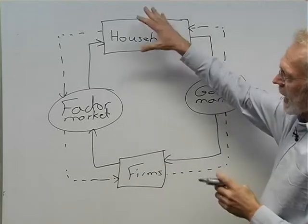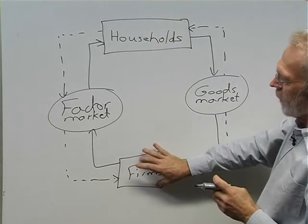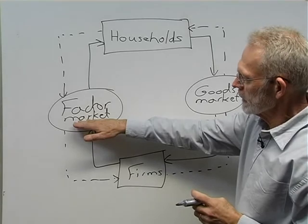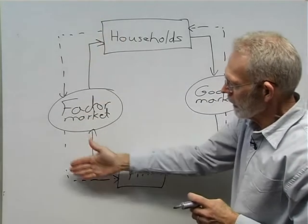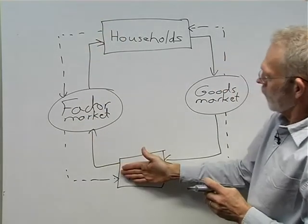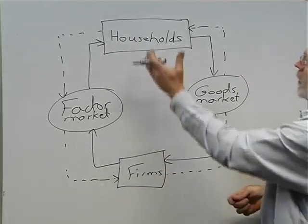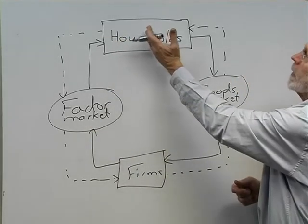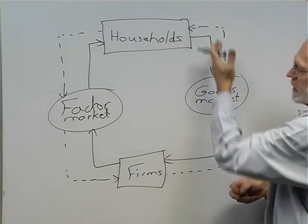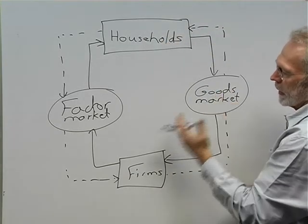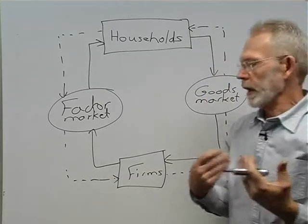We can see the interaction taking place between households and firms on the factor market, where there's a flow of factors of production and a flow of income, and on this side households use the income which they spend on the goods market and receive goods and services in return.